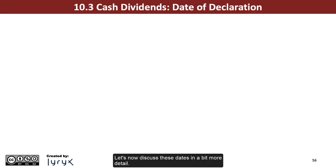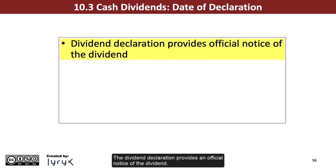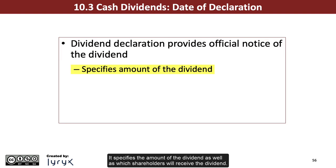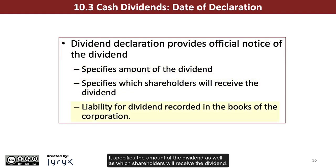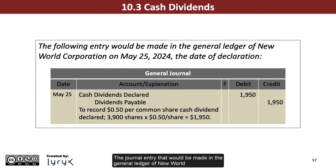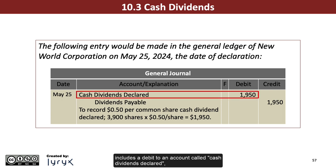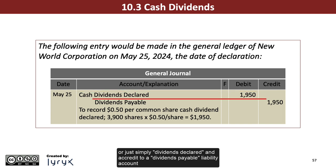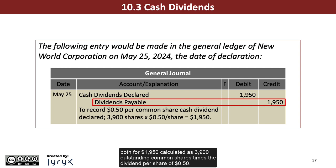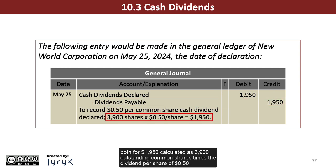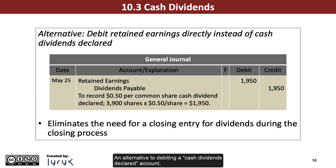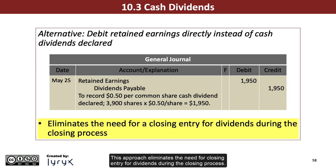Let's now discuss these dates in a bit more detail. The dividend declaration provides an official notice of the dividend. It specifies the amount of the dividend, as well as which shareholders will receive the dividend. The liability for the dividend is recorded in the books of the corporation at its declaration date. The journal entry made in the general ledger of New World Corporation on May 25, 2024 — the date of declaration — includes a debit to an account called cash dividends declared, or simply dividends declared, and a credit to a dividends payable liability account, both for $1,950, calculated as 3,900 outstanding common shares times the dividend per share of $0.50. An alternative to debiting a cash dividends declared account is to directly debit retained earnings instead. This approach eliminates the need for a closing entry for dividends during the closing process.